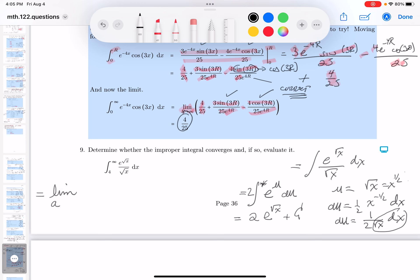I'm going to use the letter a goes to infinity. I'm going to use this antiderivative and I'm going to evaluate it at a and at 4. So we get 2 e to the root a minus 2 e.